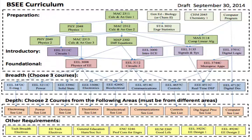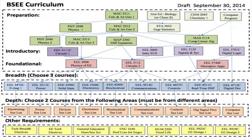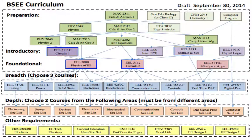We recently revised our ECE curriculum to allow much greater flexibility in choosing electives. Students choose from a list of nine breadth courses, all with embedded labs. This puts a premium on lab space and time that the Analog Discovery boards help to alleviate. But it makes it even more important that our lower level required classes, with or without embedded labs, provide as many practical skills as possible. Responsibility has fallen on me to increase the value of these required classes in labs, and it has proven to be quite a challenge.